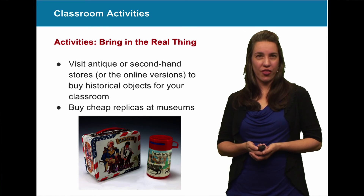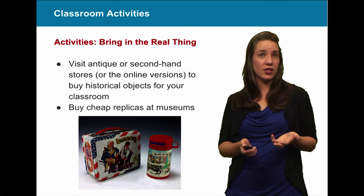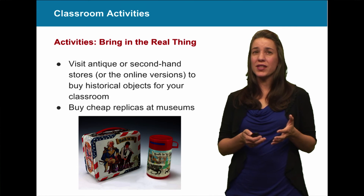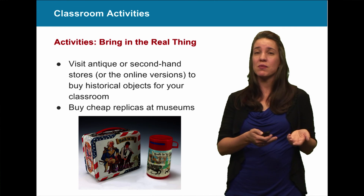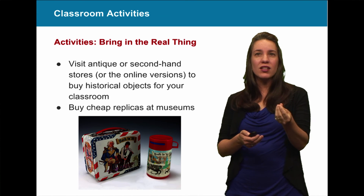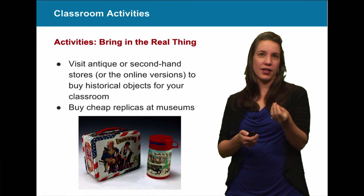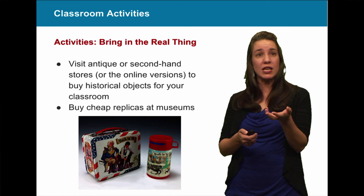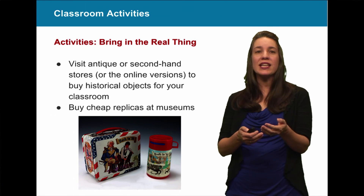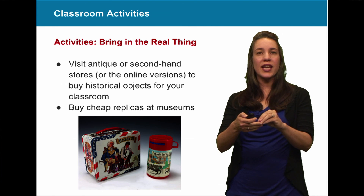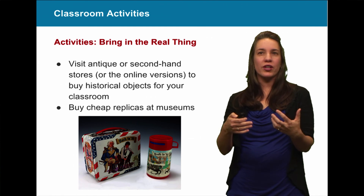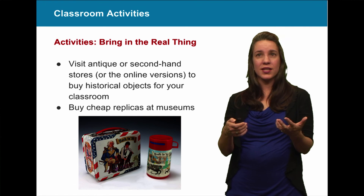You can also bring in the real thing. Visit antique stores, secondhand stores, or their online versions to buy historical objects for your classroom. They don't have to be expensive or something students have seen before. Getting something a student can hold and touch really brings authenticity to life. You can also buy cheap replicas at museums — bullets, coins, buttons — because getting kids that tactile connection with an object gets them thinking about ordinary or extraordinary people living their lives in the past and how they can relate to it.